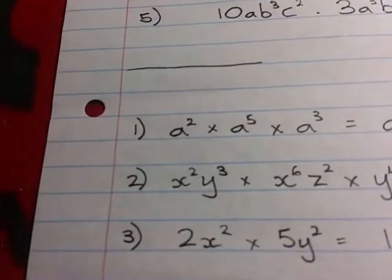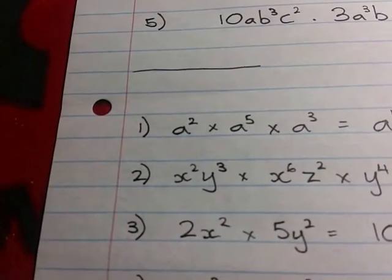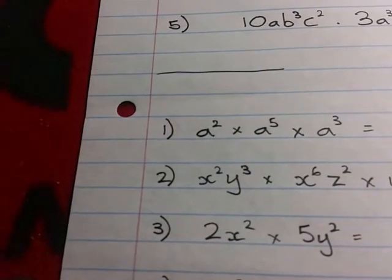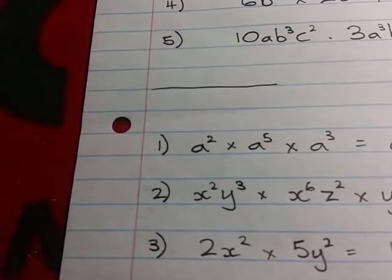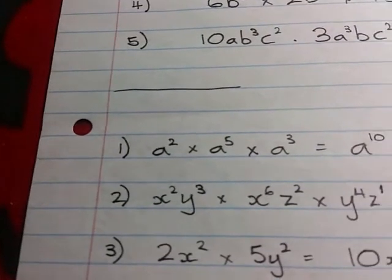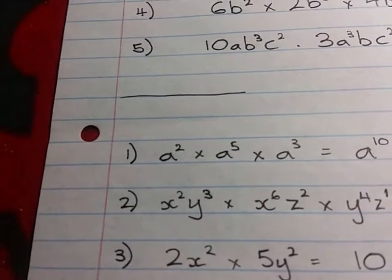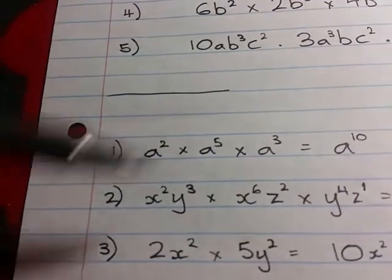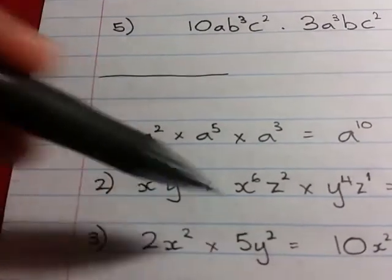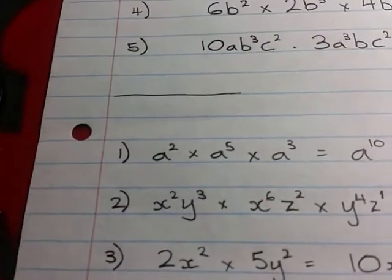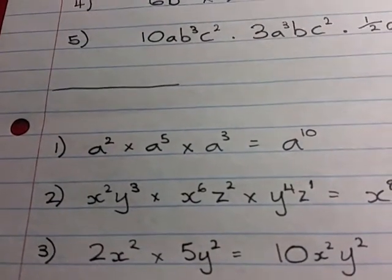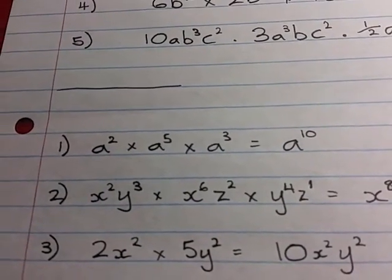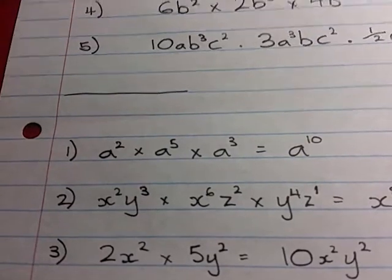2x to the 2 times 5y to the 2. The 2 times 5 like normal, because numbers, coefficients, so you end up with 10. And since that's x and y, they are not the same base, therefore they just come together, giving you a final answer of 10x squared y squared.